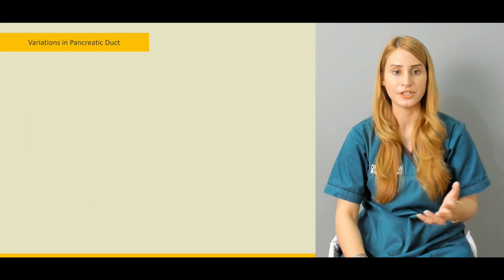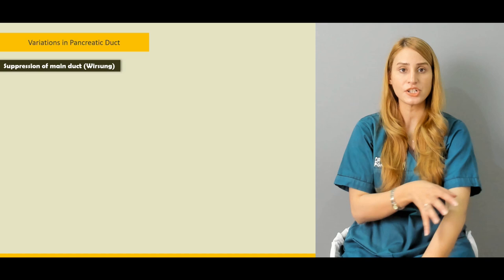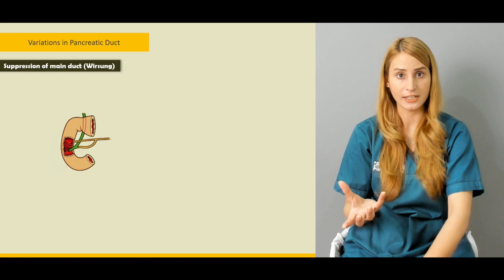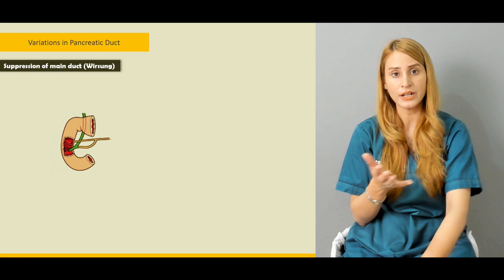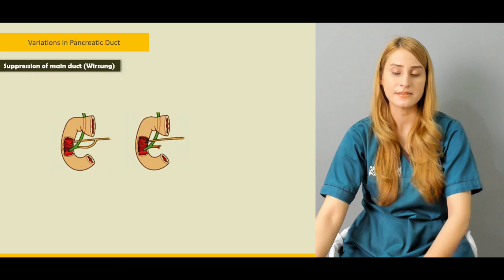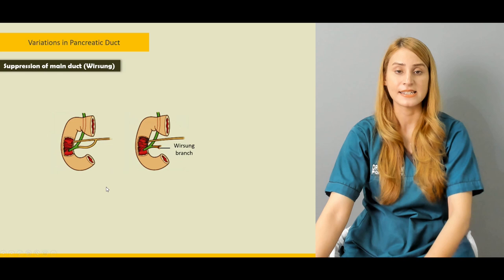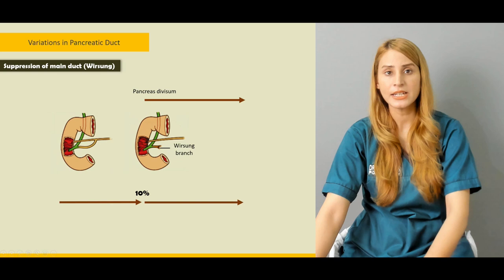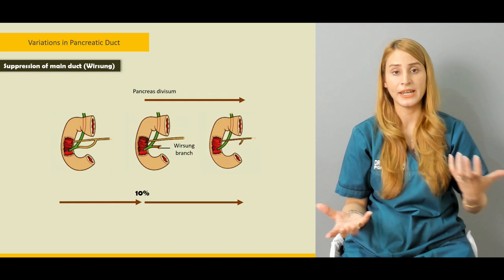There can be suppression of the accessory pancreatic duct or suppression of the main pancreatic duct. If the accessory duct is suppressed, the main duct opens into the minor duodenal papilla — this is called Santorini's variation. If the main duct is suppressed, that is a different variant. You can see an obstruction or suppression of the main pancreatic duct in the diagram.